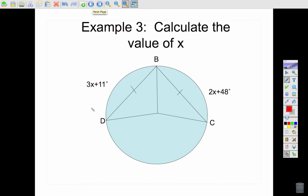Example 3, finding the value of X. So I have two chords marked as congruent on here, right here and here. BD and BC are congruent. And if those are congruent, then the arcs that they intercept are also congruent. So that means I can just go ahead and set up an equation. 3X plus 11 equals 2X plus 48. So if I subtract 2X, I get X, subtract 11, I get 37.